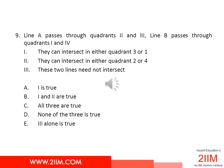Line A passes through quadrants 2 and 3, Line B passes through quadrants 1 and 4. We've been given three statements. Statement I: these two lines can intersect in either quadrant 3 or 1. Statement II: the lines can intersect in either quadrant 2 or 4. Statement III: these two lines need not intersect at all, and the question